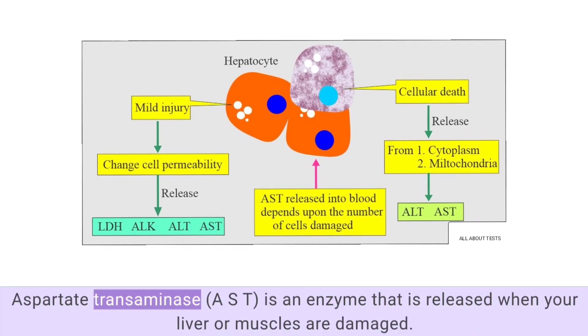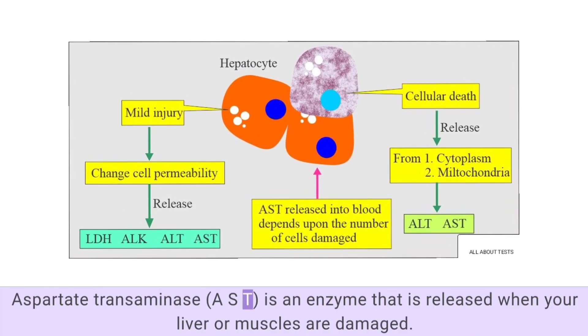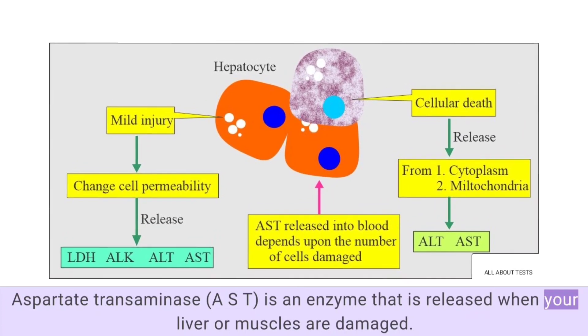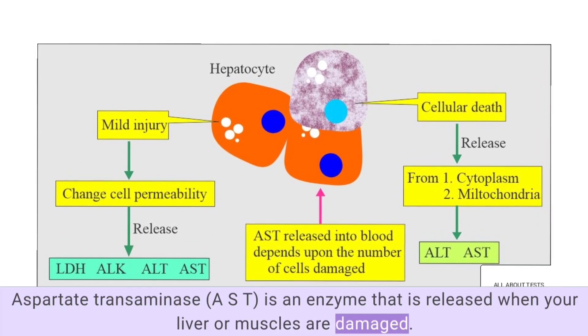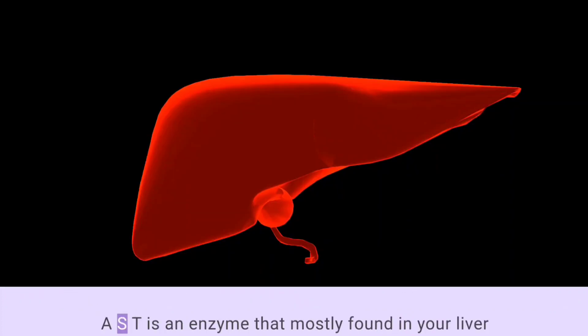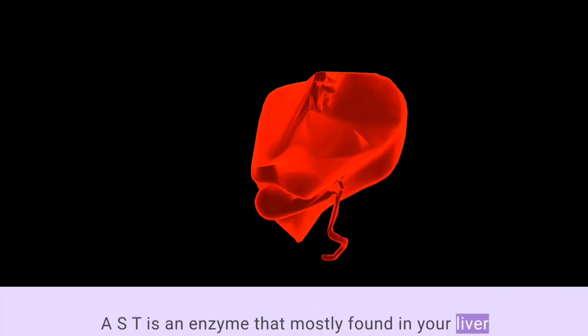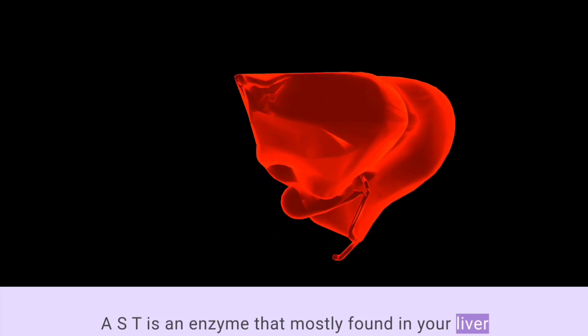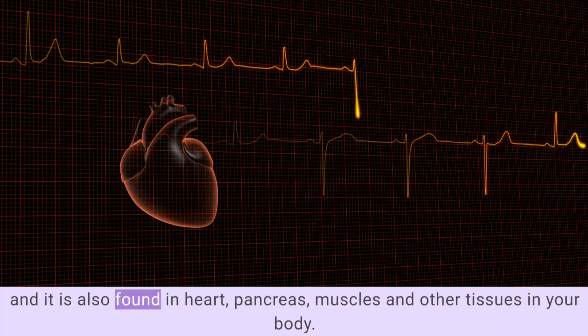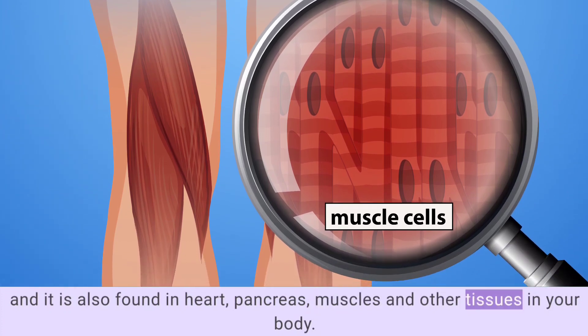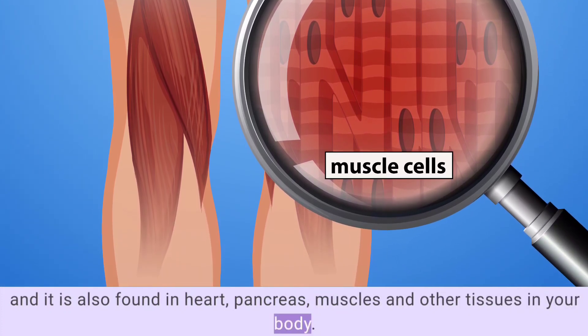Where is AST produced and synthesized? AST is an enzyme that is released when your liver or muscles are damaged. It is an enzyme mostly found in your liver, and it is also found in the heart, pancreas, muscles, and other tissues in your body.